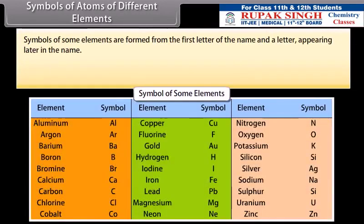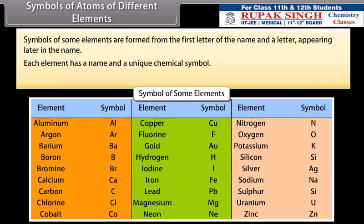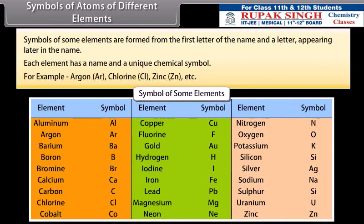Symbols of some elements are formed from the first letter of the name and the letter appearing later in the name. Each element has a name and a unique chemical symbol. For example, Argon, Ar, Chlorine, Cl, Zinc, Zn, etc.